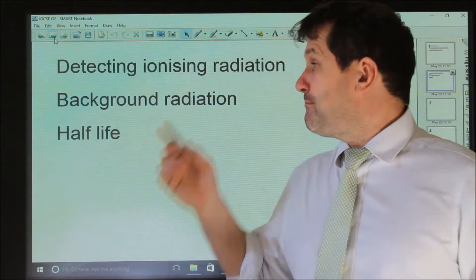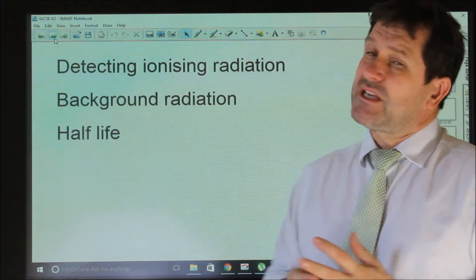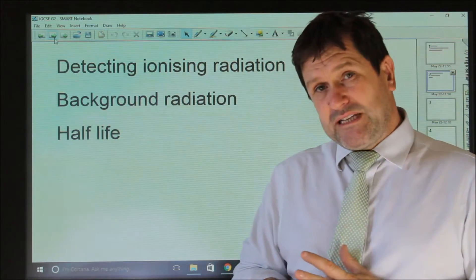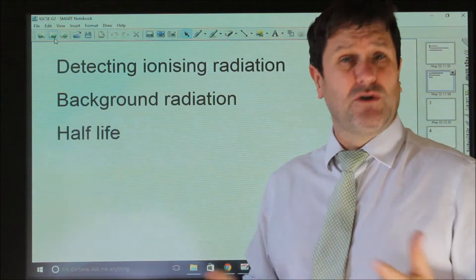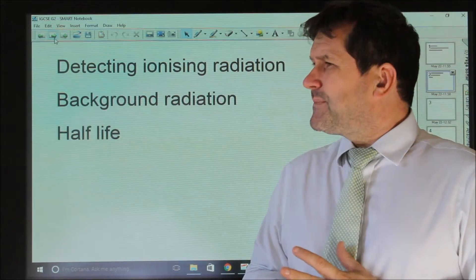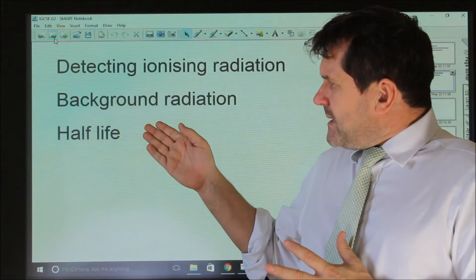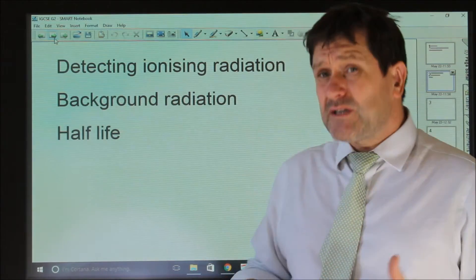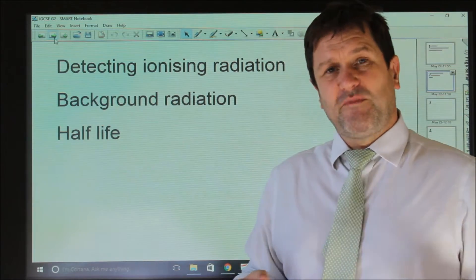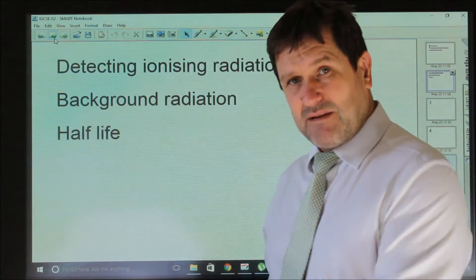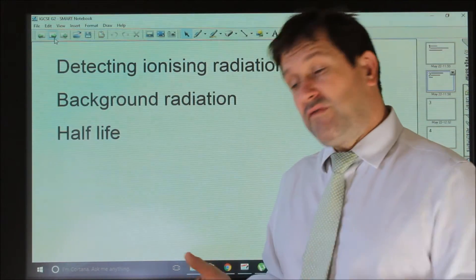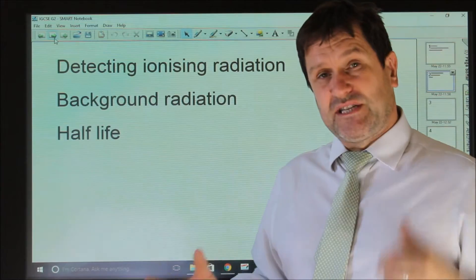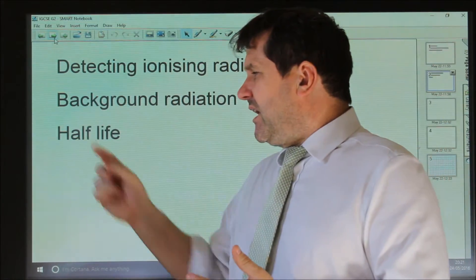When we do calculations based on half-life, for example, it's important to consider background radiation. If I was to use a Geiger-Muller tube to detect the amount of radioactivity given off by a particular sample, I might read it as a hundred counts per minute and say the activity of the sample is a hundred becquerels or counts per minute. But if I did not take into account background radiation, this would not be a true reading. If background radiation was 10, I would have to remove that, subtract the 10, in order to get an accurate reading for the sample after considering background.